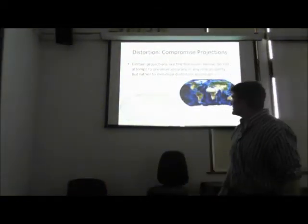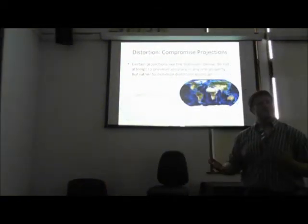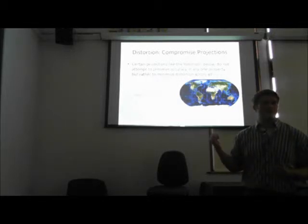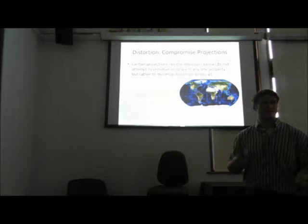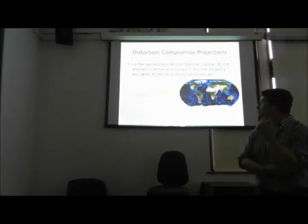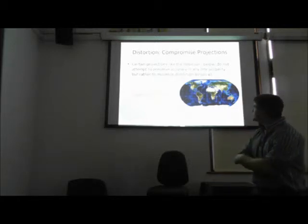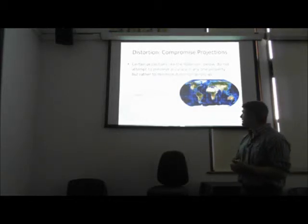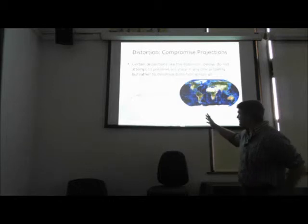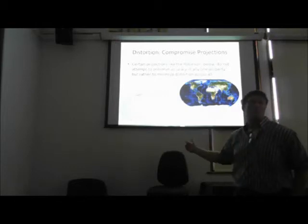Certain other projections don't attempt to maximize the preservation of accuracy in any one of these properties, but rather to balance them out so that no single property exhibits real problematic distortion. It's hard to preserve features at broader scales, so typically you'd see these projections for maps of continents or global maps. This one here is called the Robinson.